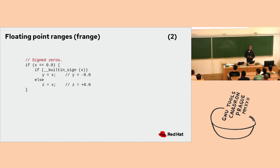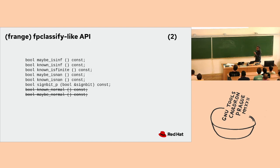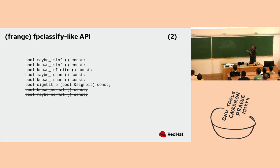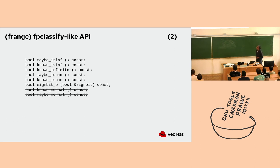I've seen interesting jump threading paths we now get because the backwards threader — due to last year's work — uses the Ranger as a client and is now able to fold paths containing floating point. However, we also implemented an 'fp_classify'-like API. For those familiar with the C library, this lets you ask if a number is a NaN, infinity, or known to be finite. We use the same API but prefixed with 'maybe' and 'known,' because in the world of ranges you can sometimes be sure, but often you just want to ask if a range has the possibility of including a NaN.